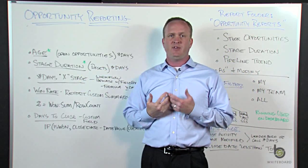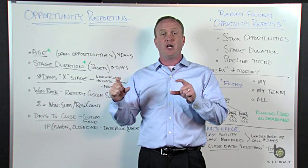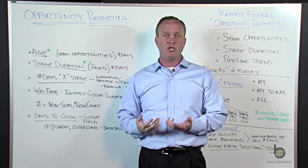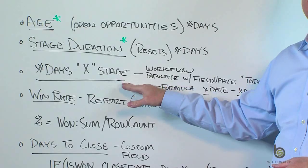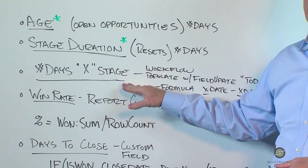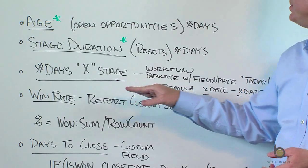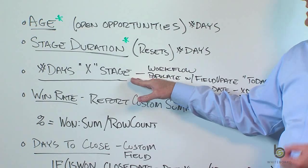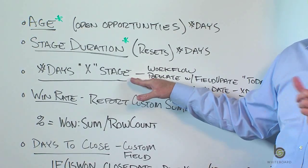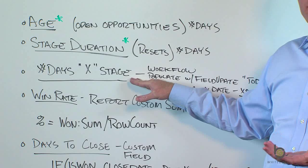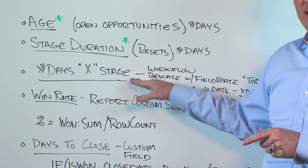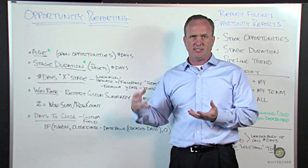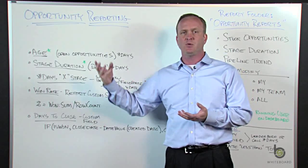If you want to track the duration of every stage in your sales process, you can do that, but you're going to have to build some custom fields and leverage something like workflow. You're going to need a date field that corresponds with every stage, and you'll use workflow to populate that date — a workflow with criteria that says if stage equals this.